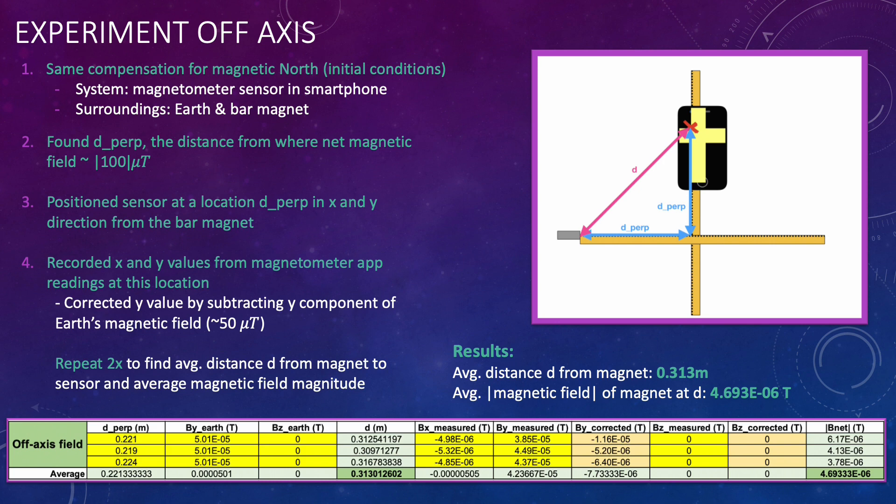I repeated this process two times to find the average distance from the magnet to the sensor and the average magnetic field magnitude at 45 degrees off axis. My average distance came out to be around 0.313 meters and my average magnetic field magnitude came out to be 4.7 microteslas. Here we assume that there is no z component.